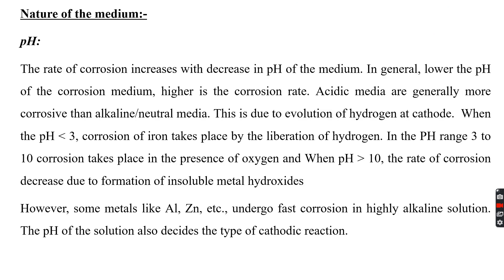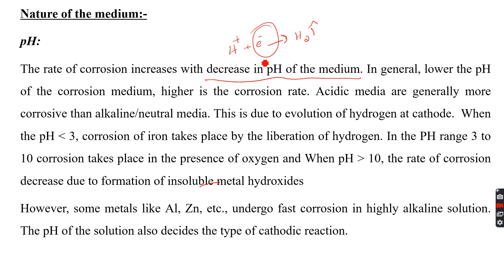The next factor is the nature of the medium, which includes three factors: pH, temperature, and conductivity. The pH of the solution decides the rate of corrosion. The rate of corrosion usually increases with a decrease in pH of the medium — that is, lower pH favours corrosion. At lower pH there is a plentiful amount of H⁺ ions, so when the metal is exposed and oxidation takes place, reduction of H⁺ at the cathode liberates hydrogen, and electron consumption takes place at a faster rate.